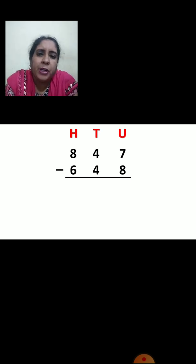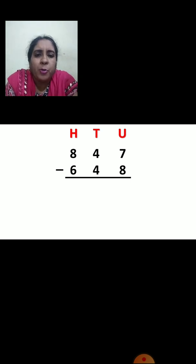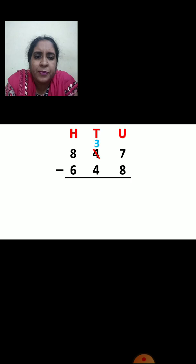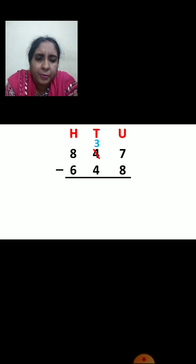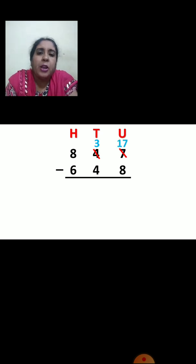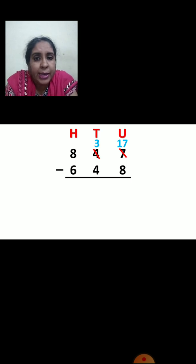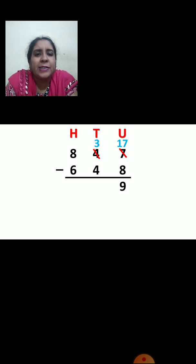We will start from units place. The numbers in units place are seven and eight. Can you subtract eight from seven? No. So you will borrow from your neighbor, that is from tens place. The tens place number is four, so you will cut four. Four minus one is three. Now you borrow one to units place, so cut seven and units place becomes seventeen. Seventeen minus eight is nine.